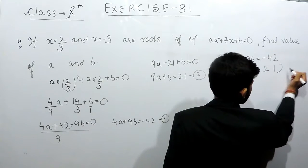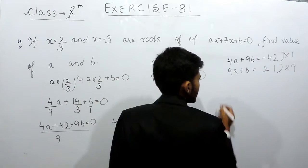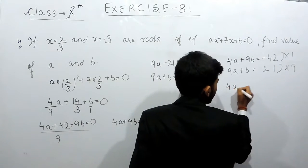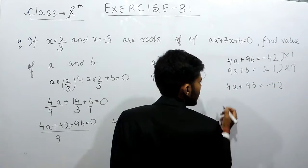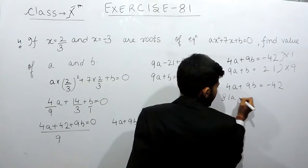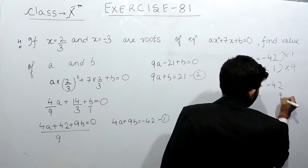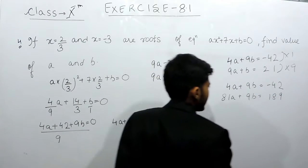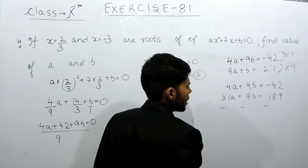So, we will multiply this equation by 9 and this equation by 1. So that will be 4a plus 9b equals to minus 42 and here it will be 81a plus 9b equals to 189. Now, the sign will change minus, minus, minus and this will cancel out.